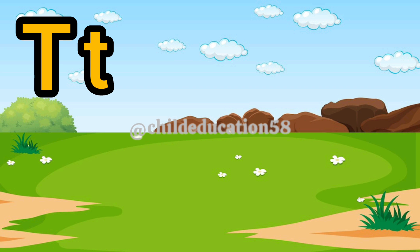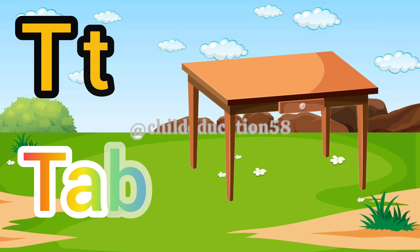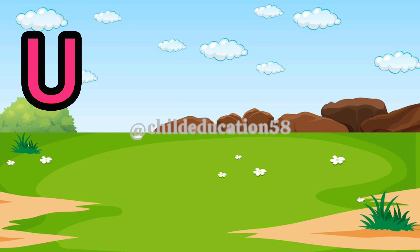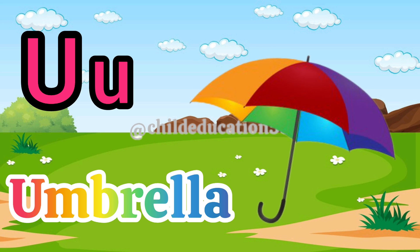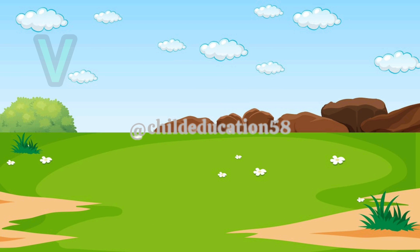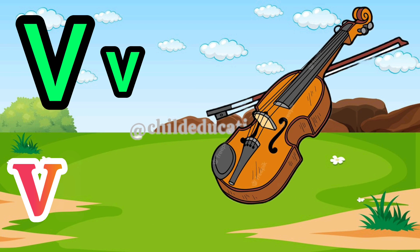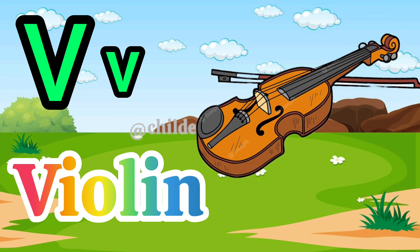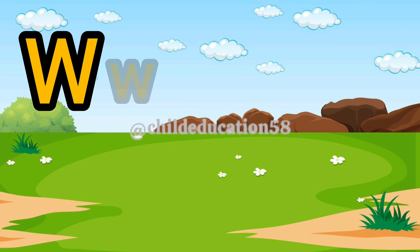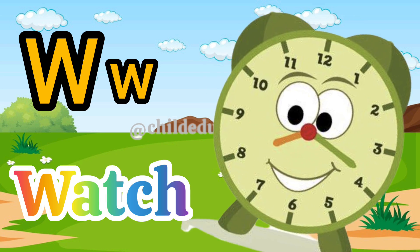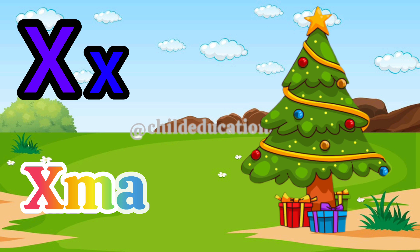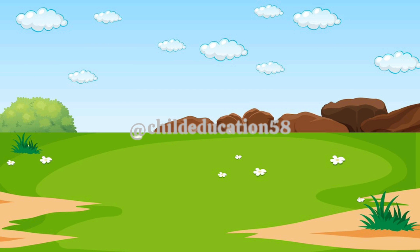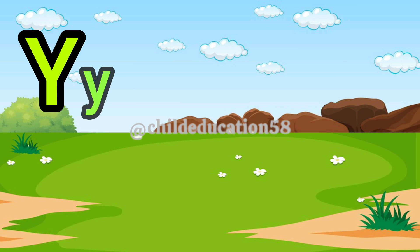Capital U, small u, U for umbrella. Capital V, small v, V for violin. Capital W, small w, W for watch. Capital X, small x, X for xylophone. Capital Y, small y, Y for yak. Capital Z, small z, Z for zebra.